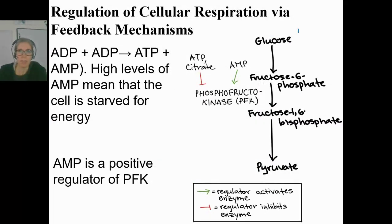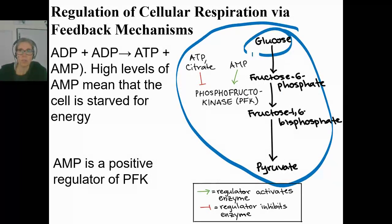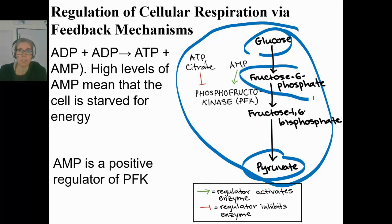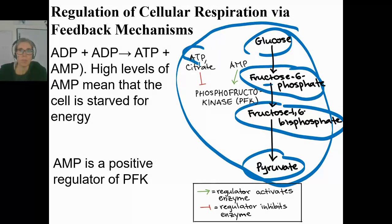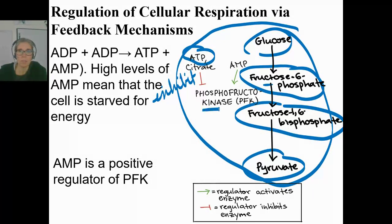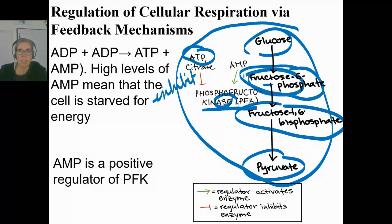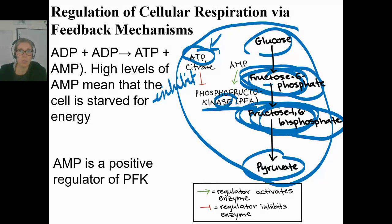Here's another example. This is glycolysis, which starts with glucose and ends with pyruvate. Fructose-6-phosphate and fructose-1,6-bisphosphate are intermediates in the glycolysis pathway. If you have too much ATP, ATP will inhibit this enzyme — phosphofructokinase. It's an enzyme needed to go from fructose-6-phosphate to fructose-1,6-bisphosphate. If you have plenty of ATP, you don't need to continue glycolysis, so you can slow down a little bit and ATP will inhibit it.